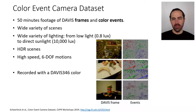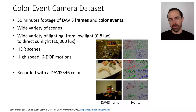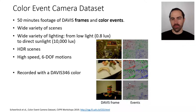Here are some examples. On the left column you see the Davis frame, which is colored, and on the right you see the individual events collected in artificial frames. You can see they mostly respond to edges in the scene, and they also try to respond to color.